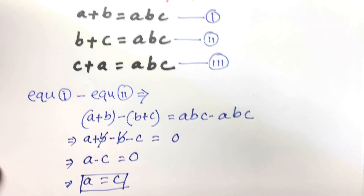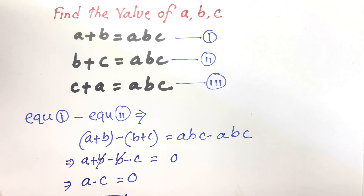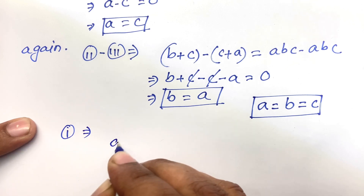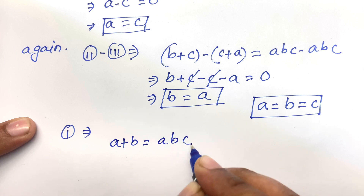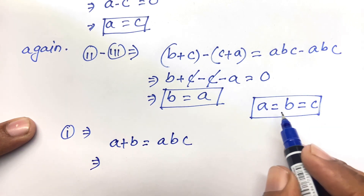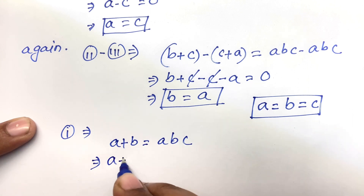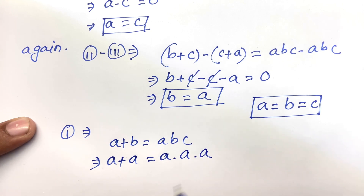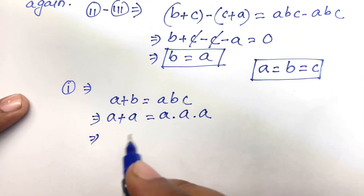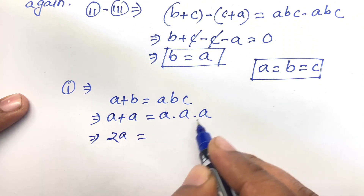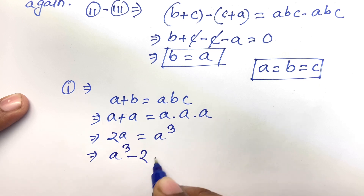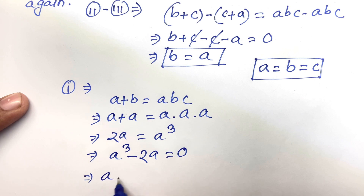Now, the first equation is A plus B equal to ABC. Since A equals B equals C, I can say A plus A equals A times A times A, which equals A cubed. So I can say easily A cubed minus 2A equals zero, and now A is common, giving A times A squared minus 2 equals zero.